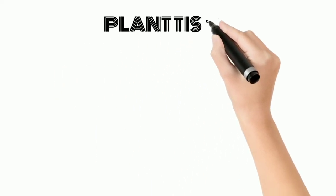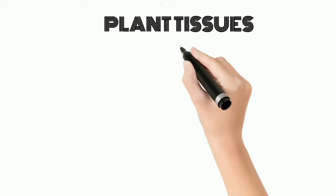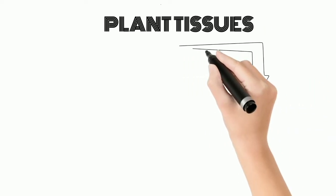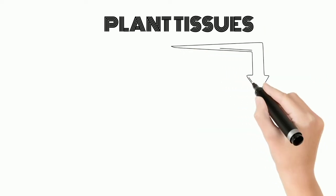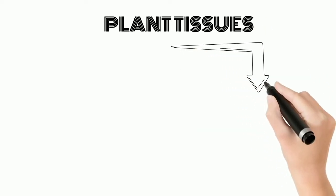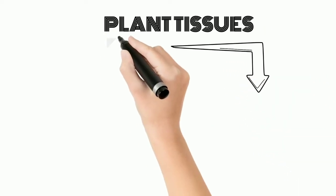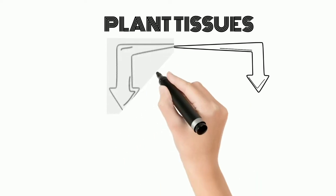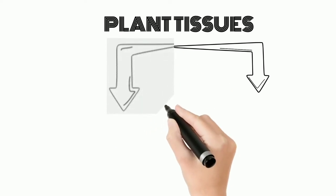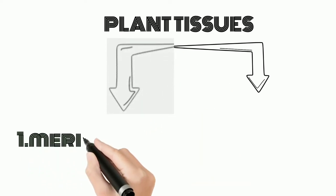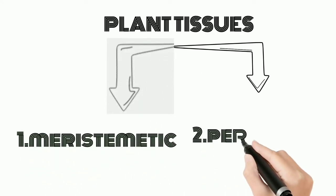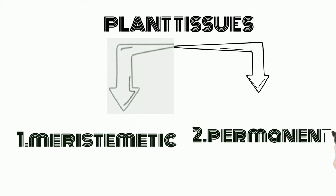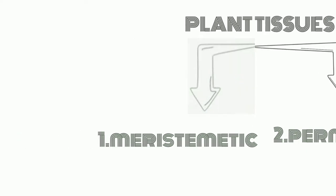Plant tissues are divided into two types: number first, Meristematic tissue, and number second, Permanent tissue.